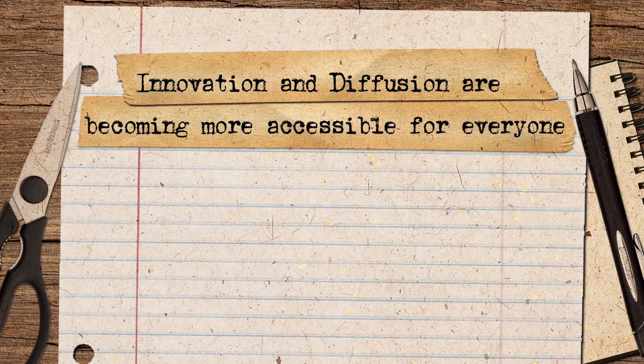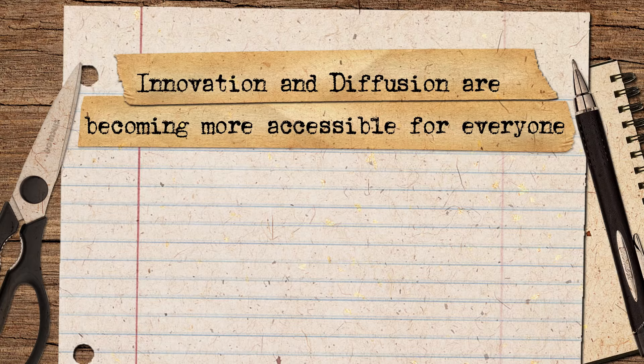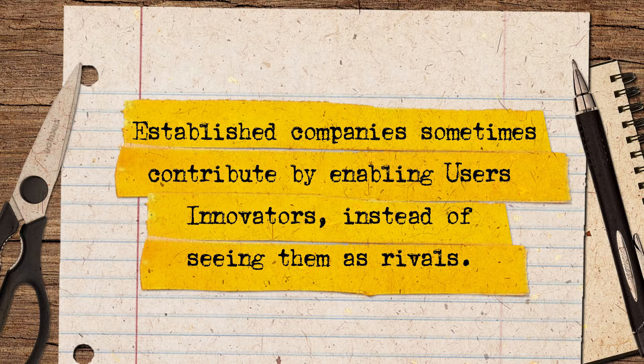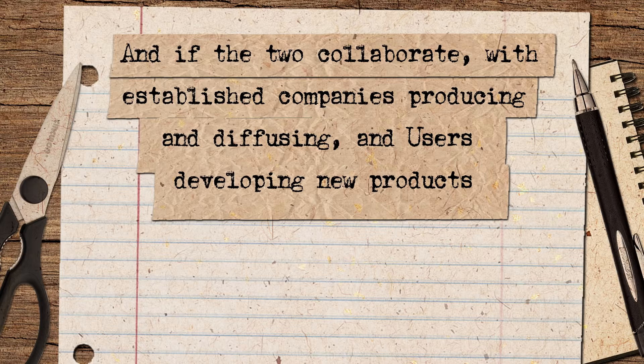So what have we learned here today? Innovation and diffusion are becoming more accessible for everyone, due to the decreasing costs of technology, communication, entrepreneurship, and more. Established companies sometimes contribute by enabling user innovators instead of seeing them as rivals. And if the two collaborate — with established companies producing and diffusing, and end-users developing new products — the relationship will be beneficial for both sides. If the future is about more and more people innovating, collaborating, becoming entrepreneurs, and better ideas helping us all change the world, the future is here and you're in it. So what are you waiting for?